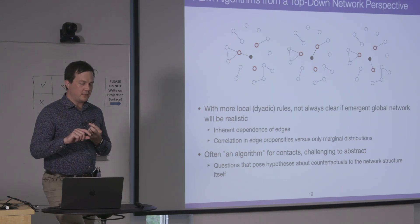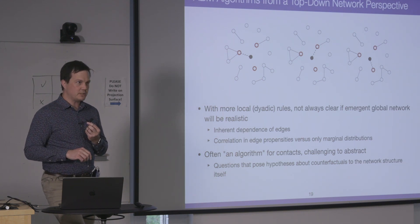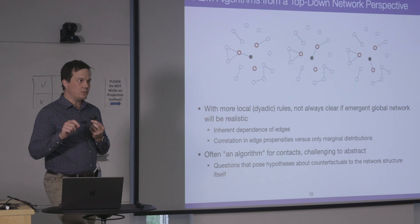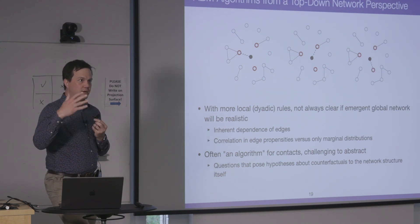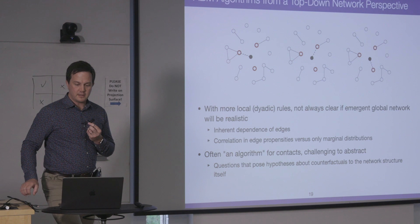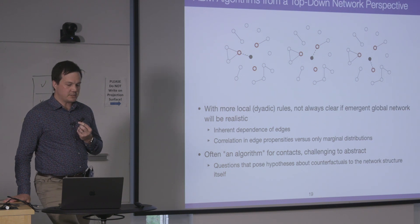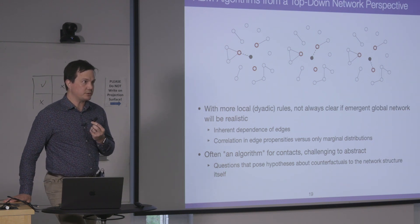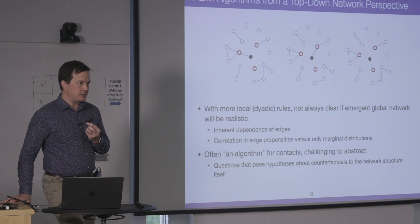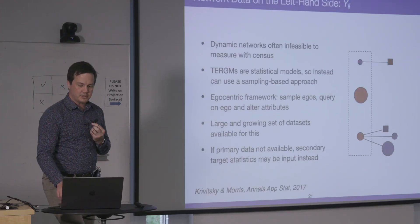From a top-down perspective, any focal node has a kind of independent set of choices, but it's often difficult within stub-matching algorithms to ask counterfactual questions — what happens if degree changes and everything else stays the same? So instead we use ERGMs, and we've probably seen this formula already this week — this is our general approach.